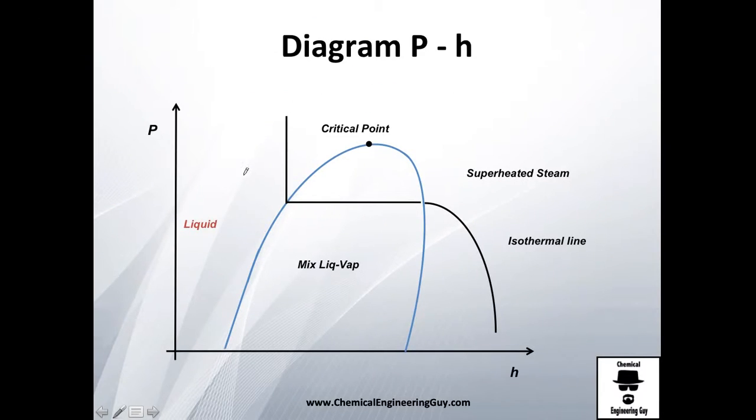Here's a diagram I'll show you. We have pressure and specific enthalpy on the axes, and it's very similar to the PV diagram. You have the liquid region, the bell-shaped curve, the mixture of liquid-vapor, and the critical point, which is a line in this case, along with isothermal lines.